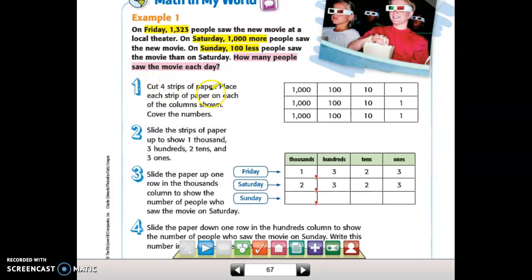And the question that I need to answer is how many people saw the movie each day? They have us cutting out strips of paper, but I can't show that on the screen, so I'm going to show you some highlighting. And we want to set up this first number, 1,323, because that's where everything starts. So 1,300, 2 tens for 20, and 3 ones.